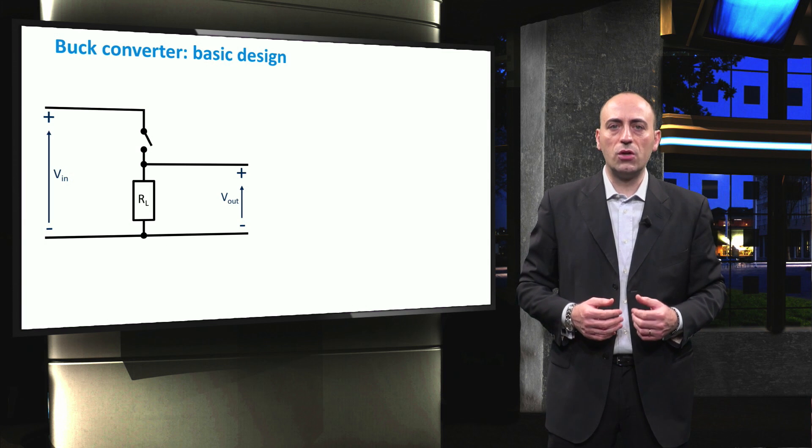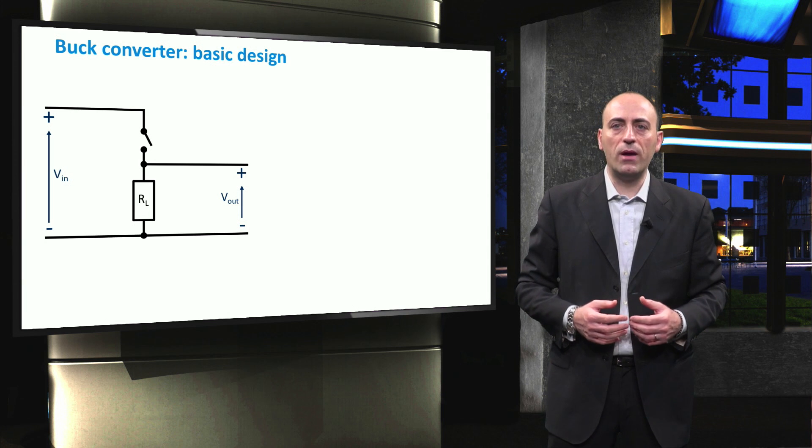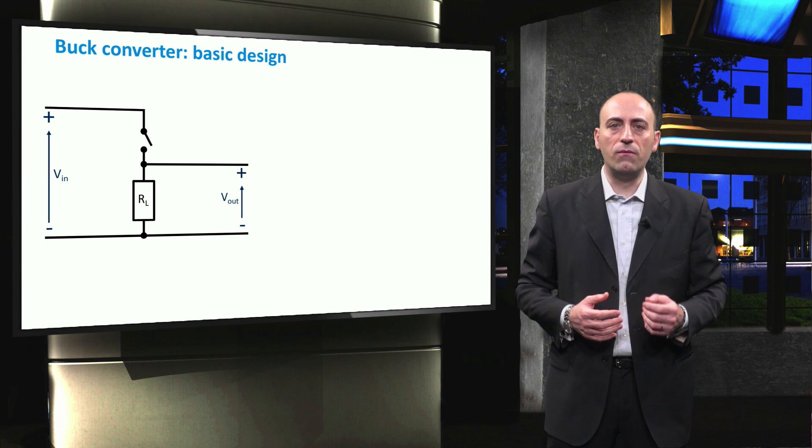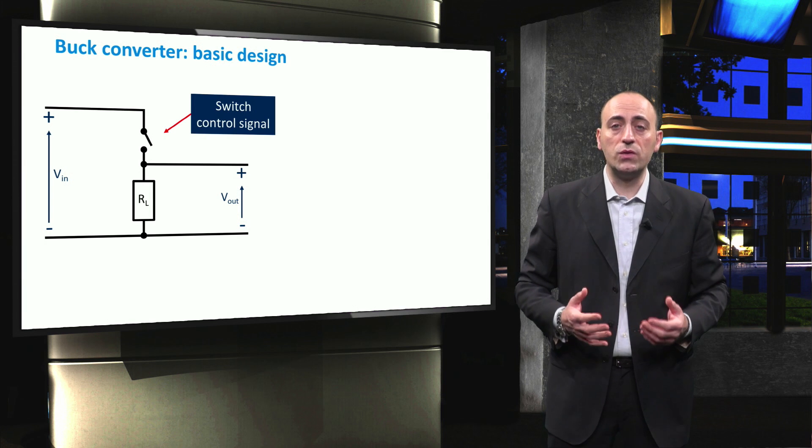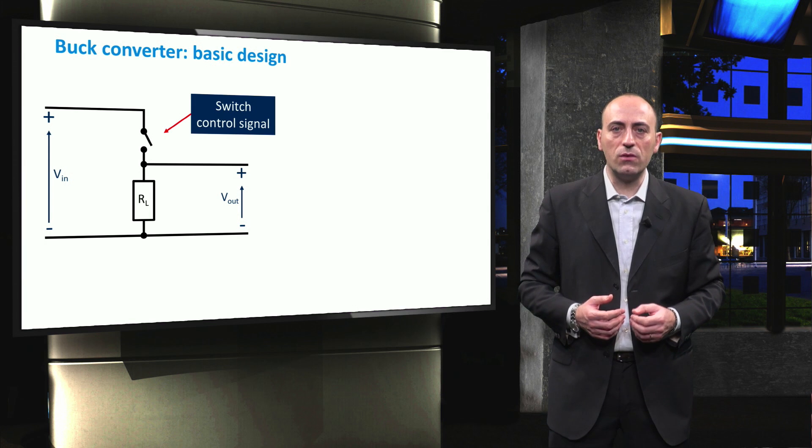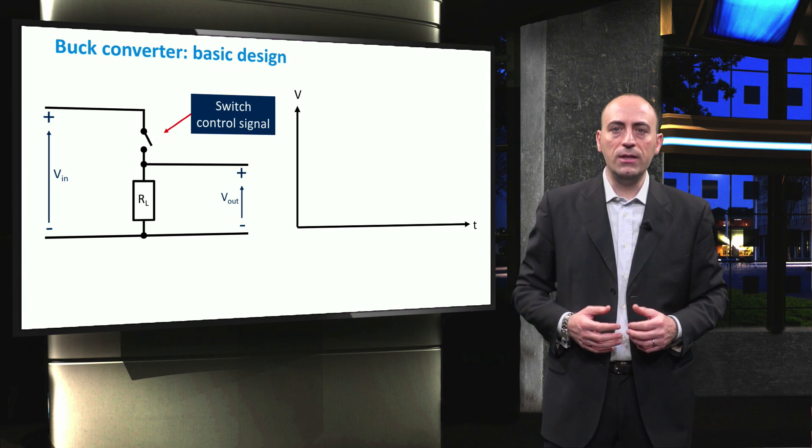Here, the simplest version of a buck converter is depicted. Starting from the left, we have the power supply, for example a PV generator, that applies the voltage at the input terminals of the converter. Then we have the control signal used to switch on or off, for example a transistor, and the resistive load RL, which receives the output voltage Vout.